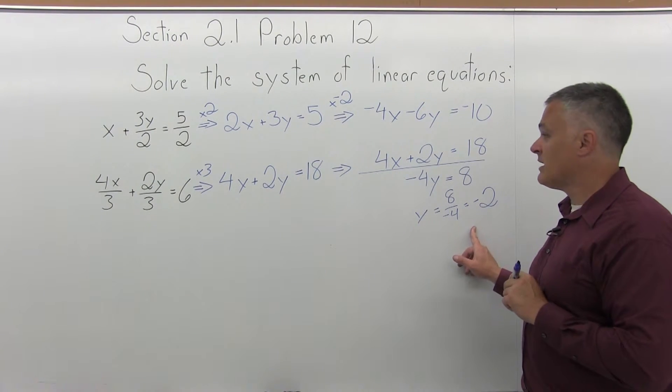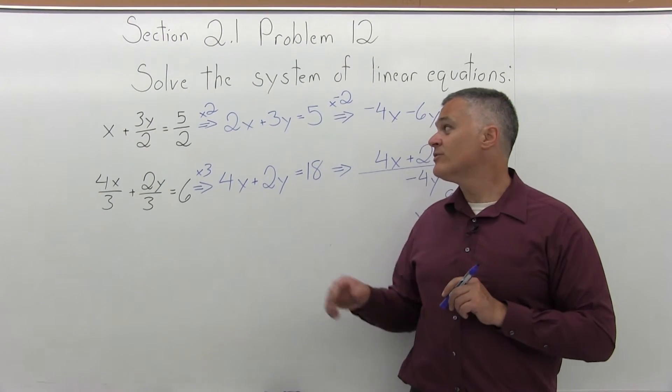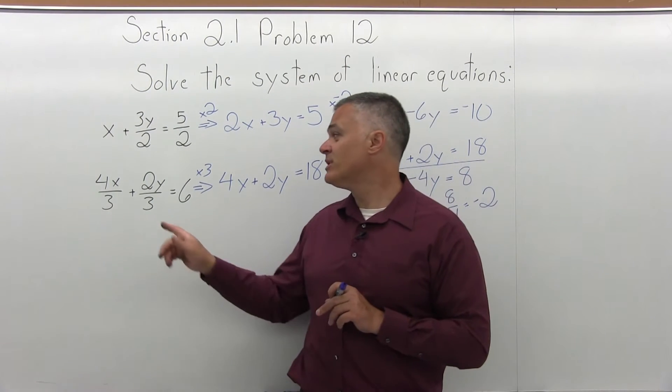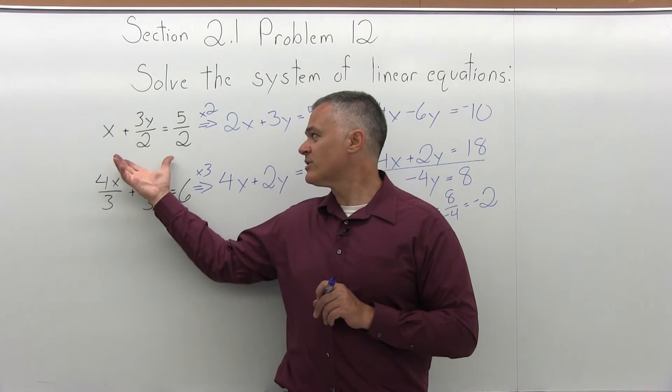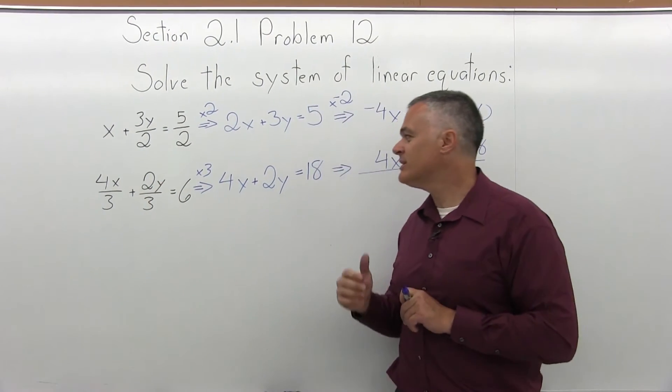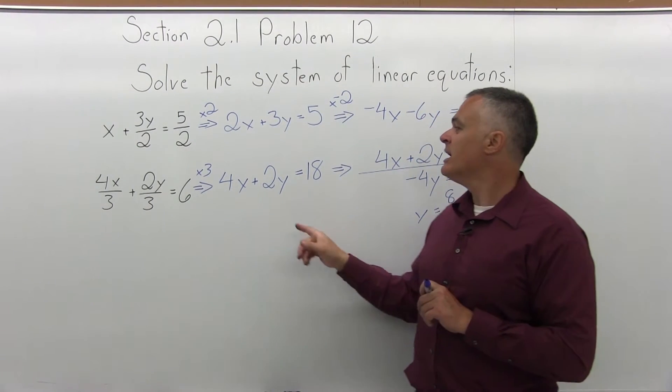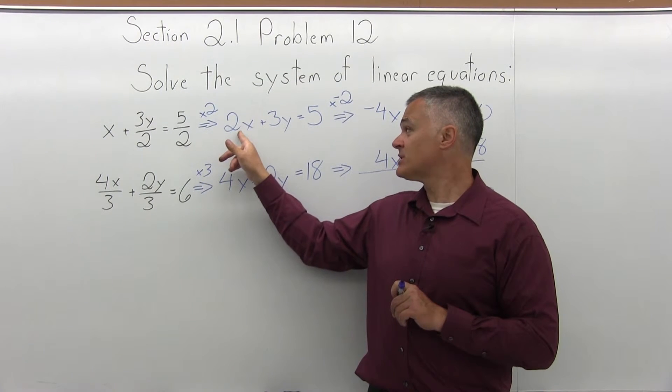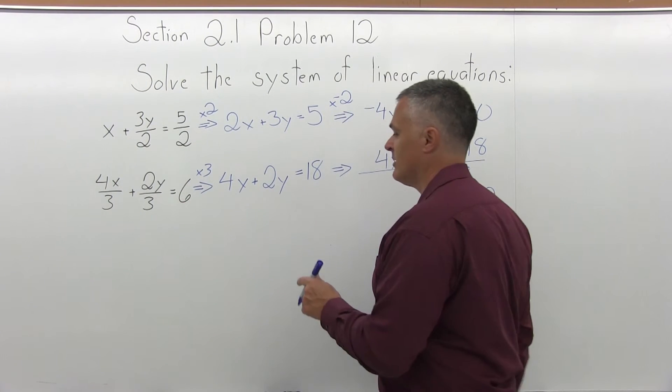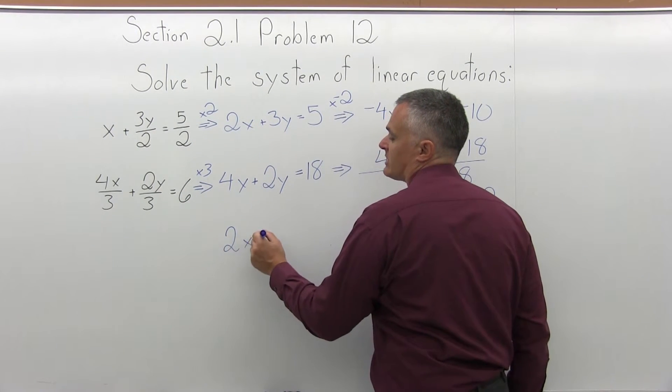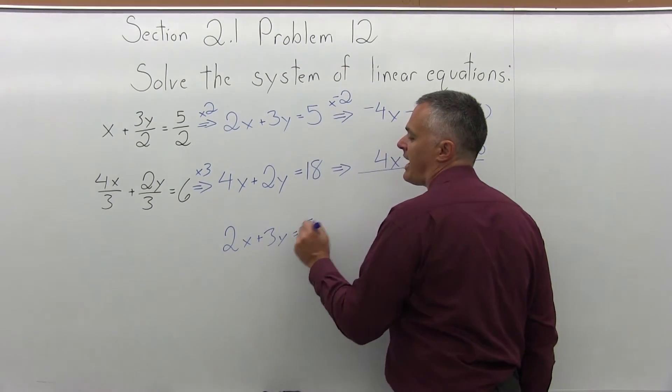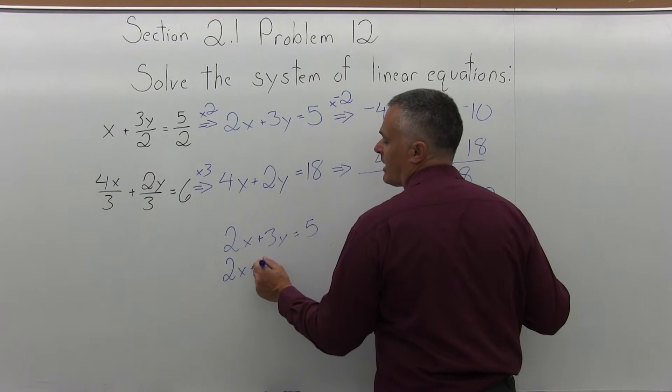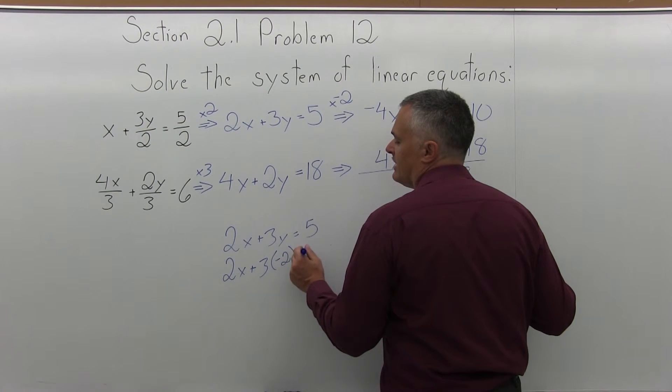Now that I have solved for my remaining variable, step 4 is go back to either of the original equations and solve for the remaining variable. Now in this particular problem, going back to the original equations is actually somewhat of a hassle because the original equations had those denominators. So I can really take my answer of y equals negative 2 and go back into one of the middle equations. I can take the one that says 2x plus 3y equals 5 and use that to find my other variable. So 2x plus 3y equals 5 and put in a value of negative 2 for y. So this will become 2x plus 3 times negative 2 equals 5.